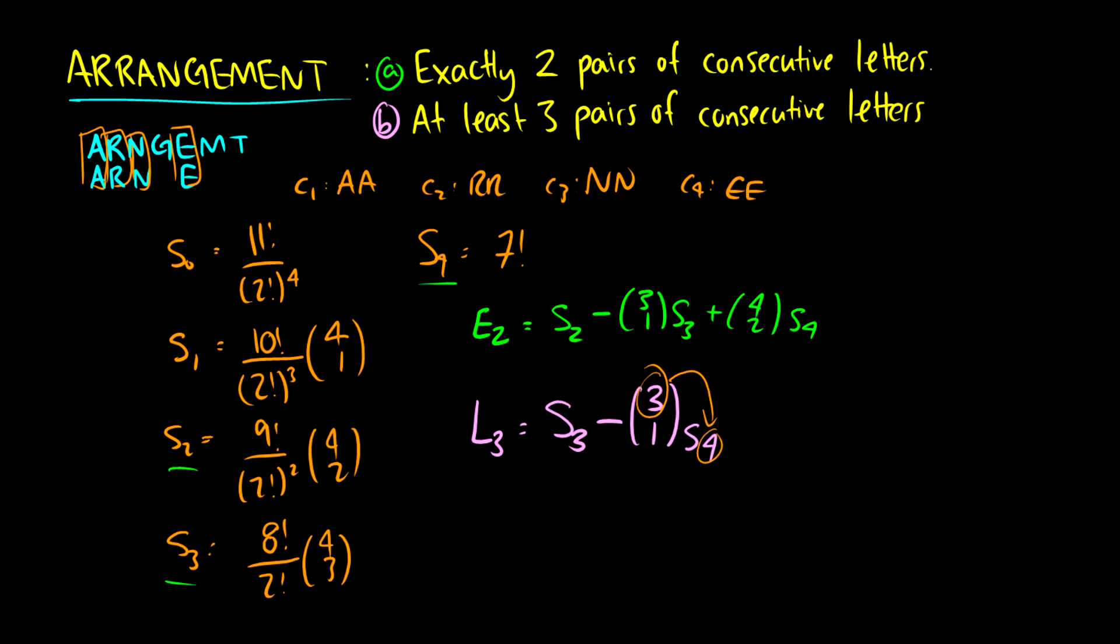Once you're able to do that this section does not really become a challenge because the proof that exactly M conditions has that formula and at least M conditions has that formula is probably the hardest thing you could do with these questions honestly. So these are your two answers to having exactly two pairs of consecutive letters and at least three pairs. Kind of cool.